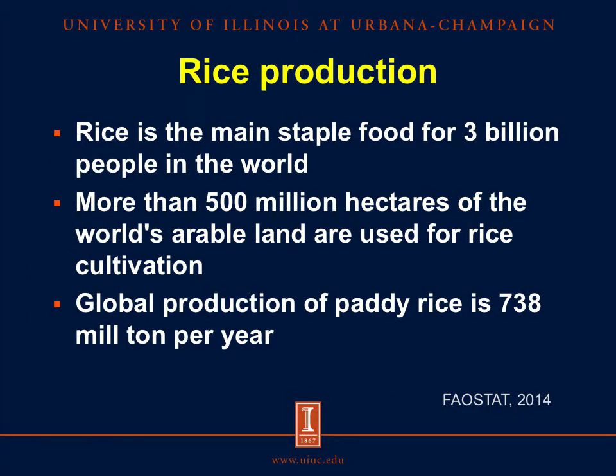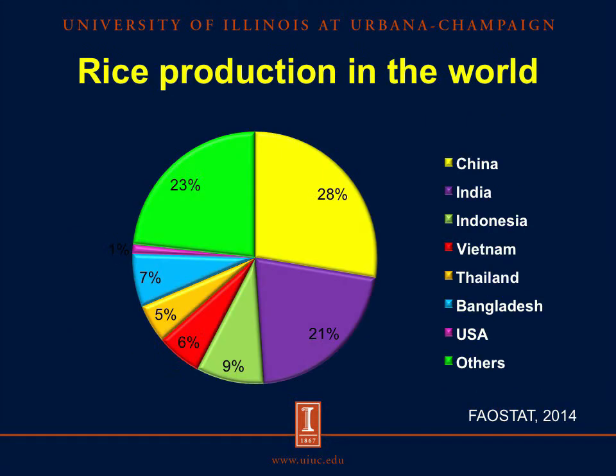Rice is one of the most important crops in the world and represents the main staple for more than 3 billion people. Also, rice takes up more than 500 million hectares of world arable land, which represents 36% of total land available to crops. According to the FAO, annual production of rice in the world is approximately 738 million tons. More than 50% of paddy rice is produced in China, India, and Indonesia.